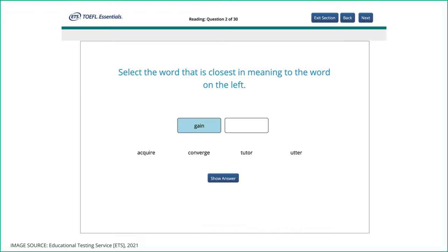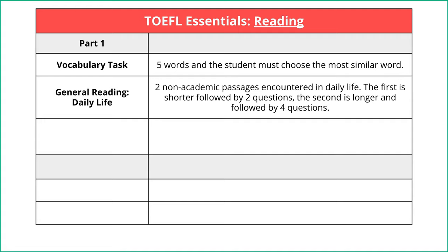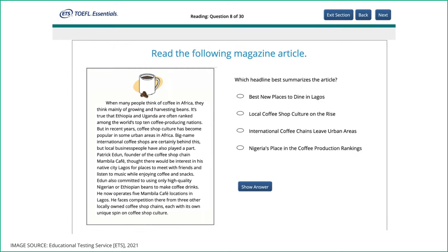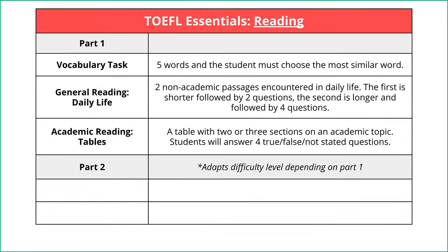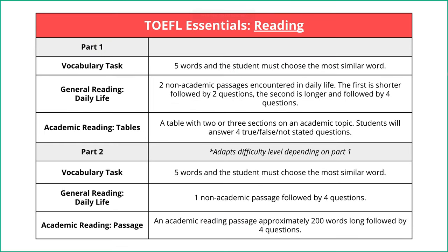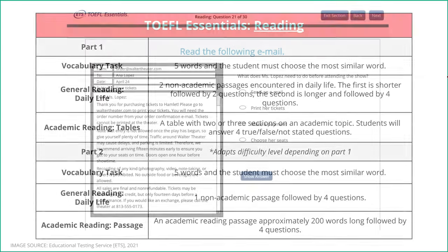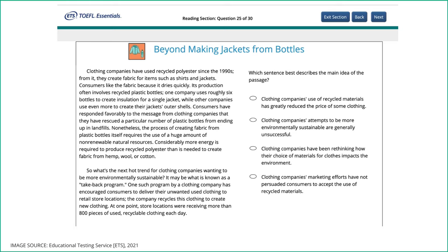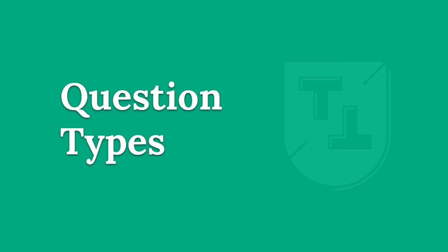Quick rundown of the Essentials reading: in part one you have a vocabulary task with five questions. Then general reading in daily life — two general reading passages each followed by two questions. A short general reading like directions on some medicine with two questions after it, and a longer general reading like a blog post or email with two questions. Then an academic reading which is a table, followed by four true or false questions. Part two is very similar: vocabulary task with five words, just one daily life reading, and one academic reading passage that's a bit longer.